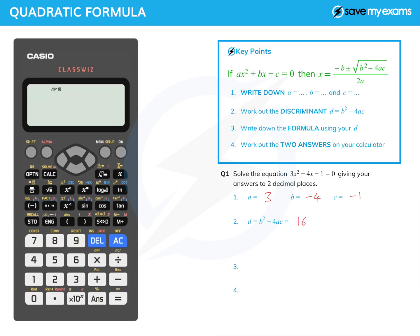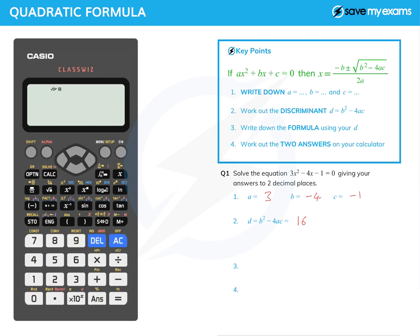So do that in your head if you can. Minus times a minus is a plus and so on. And then we carry on, minus 4 times a, which is 3, times c, which is minus 1. And I'm also going to do as much of this in my head as I possibly can.